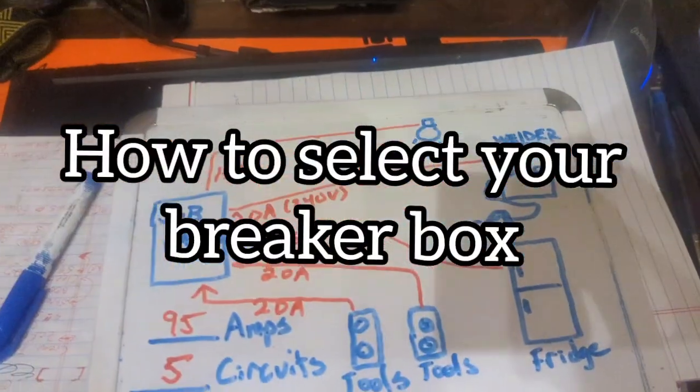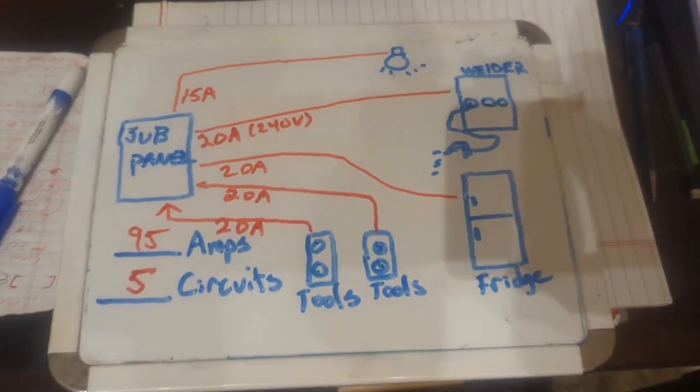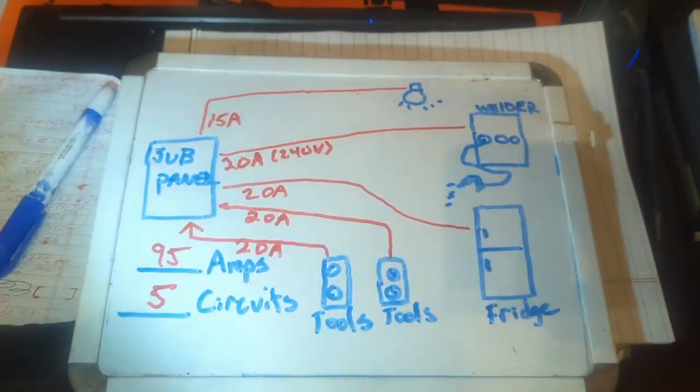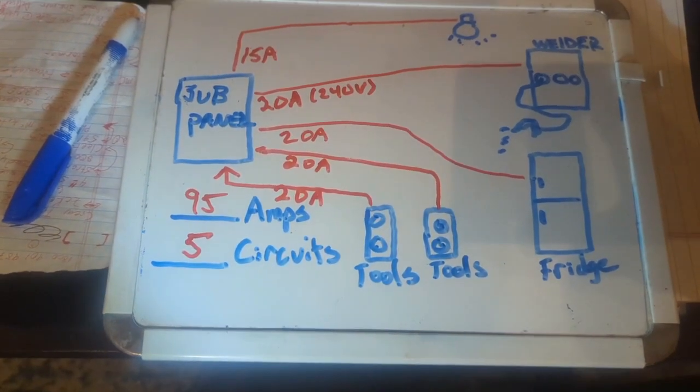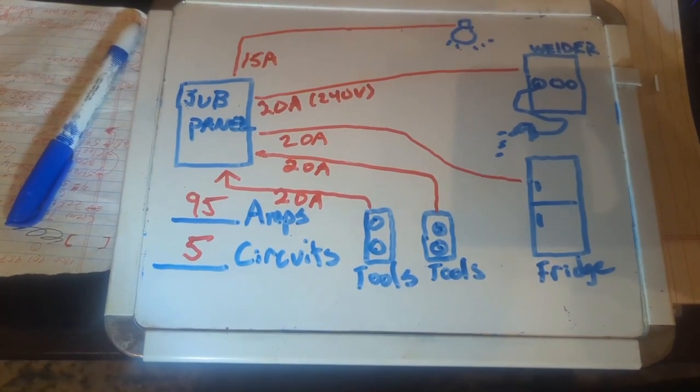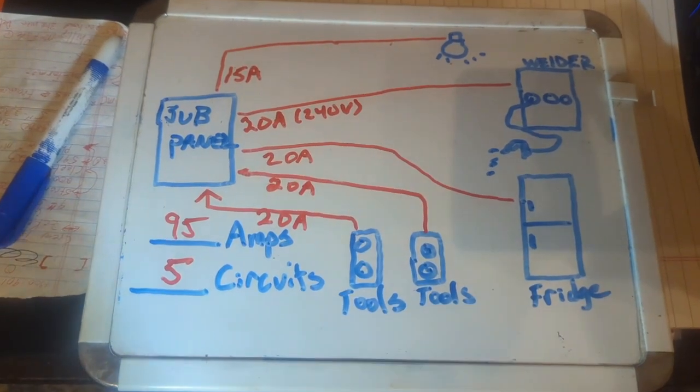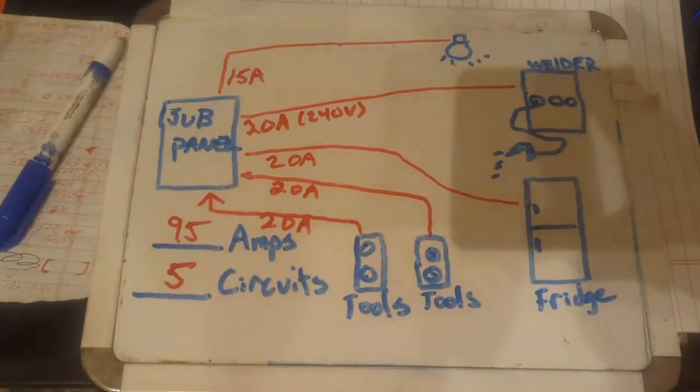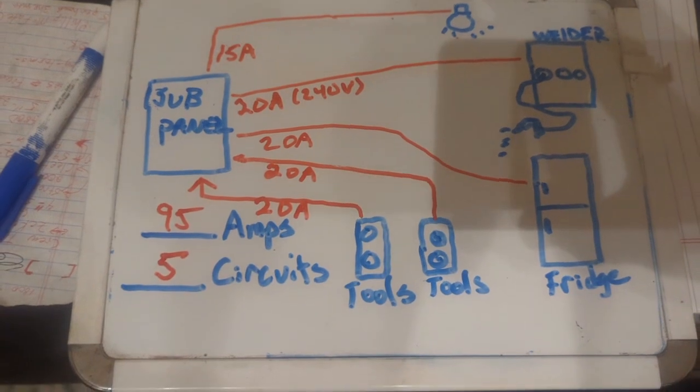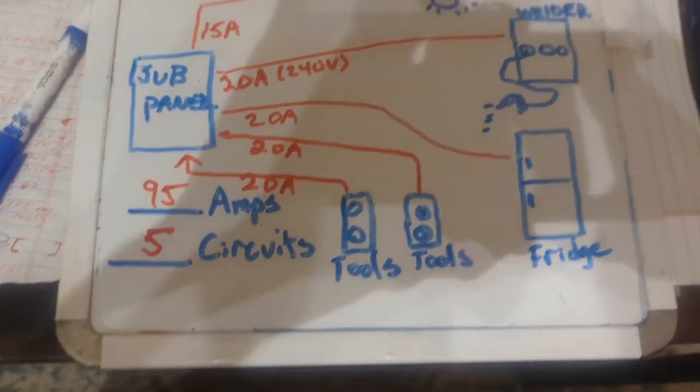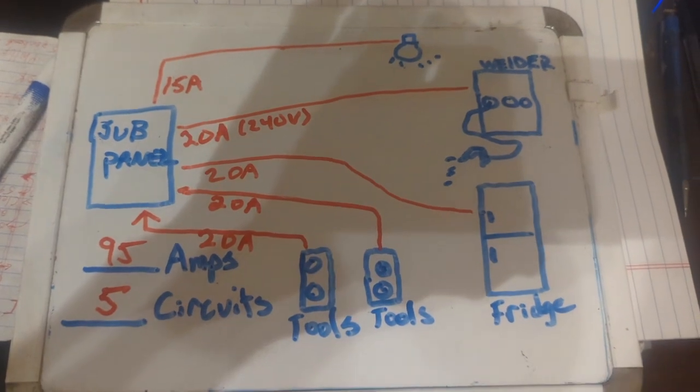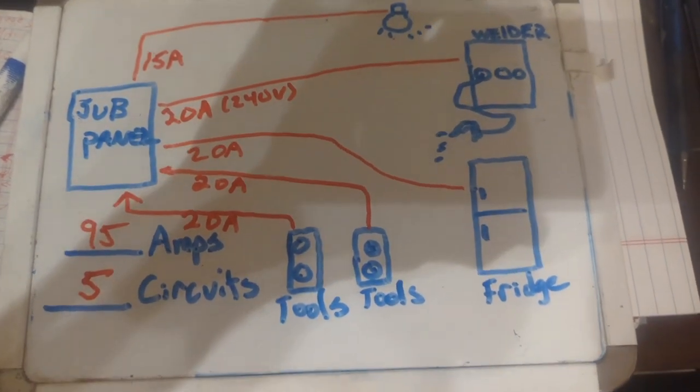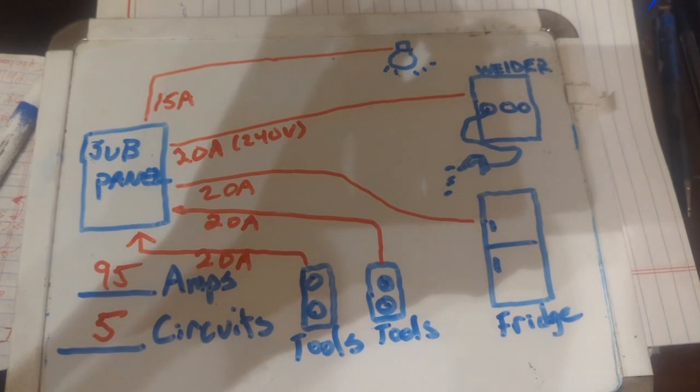Alright. So for this one here, I'm going to show you guys an example. So the first thing you got to figure out is how you're going to select your sub panel box. Like, what are you looking for? So this diagram here is a simple drawing that I did. This is just a diagram here, and this is actually the kind of stuff I do before I plan out my electrical needs.